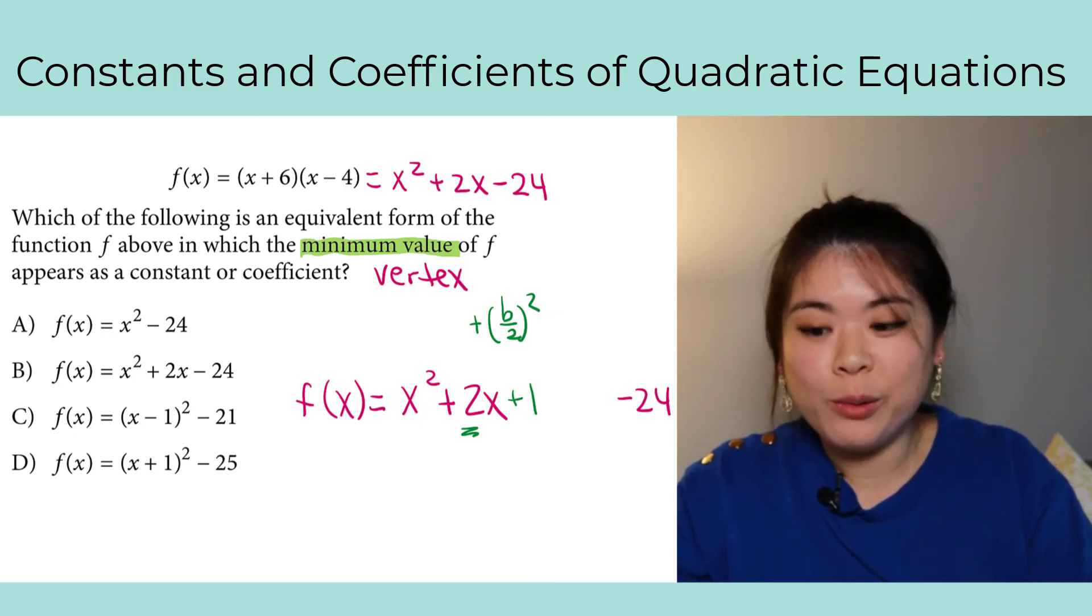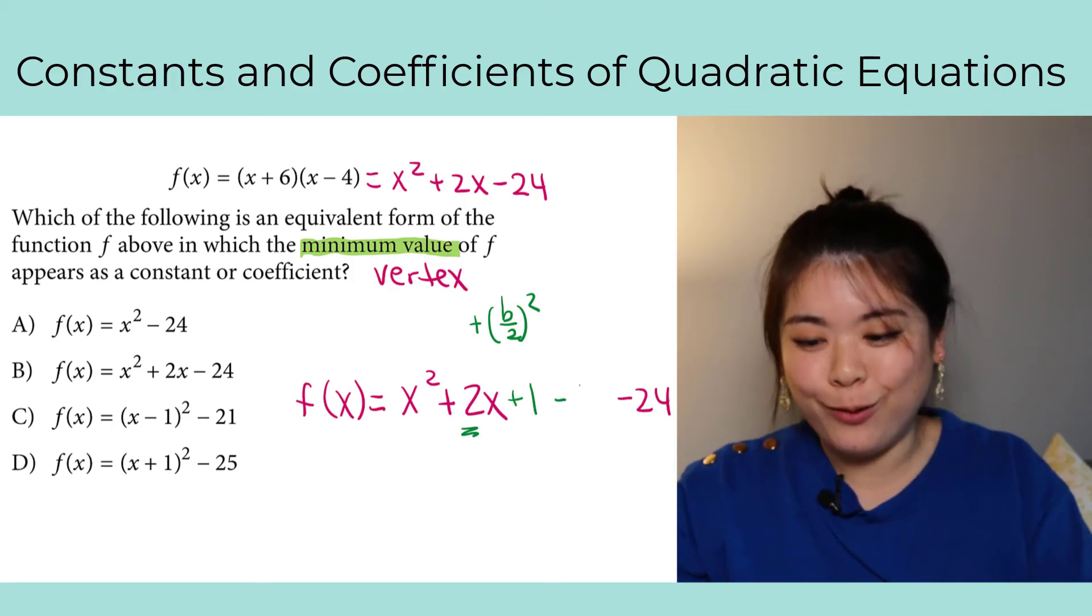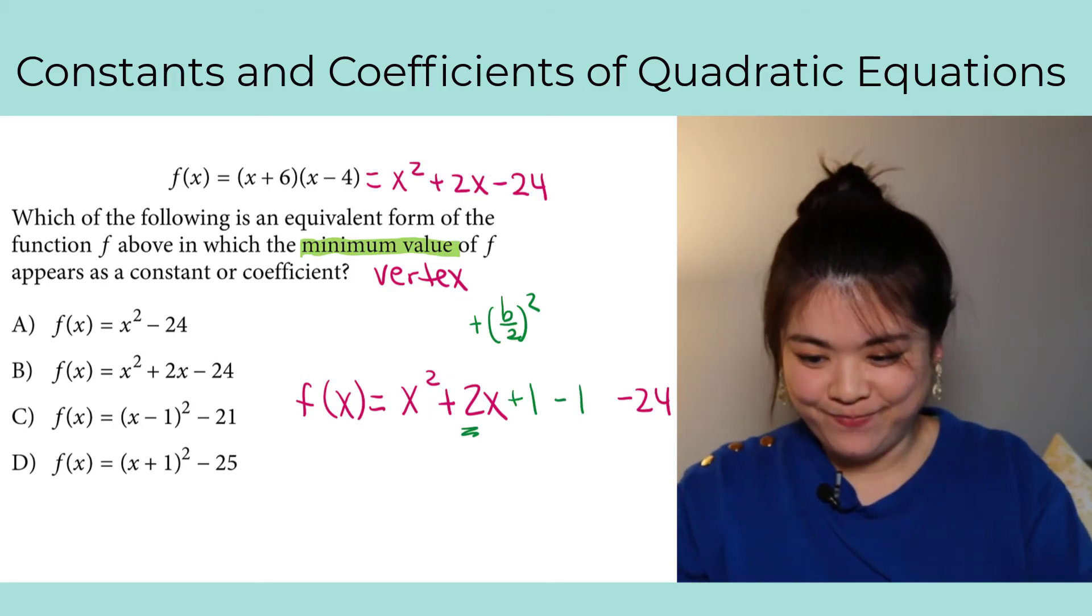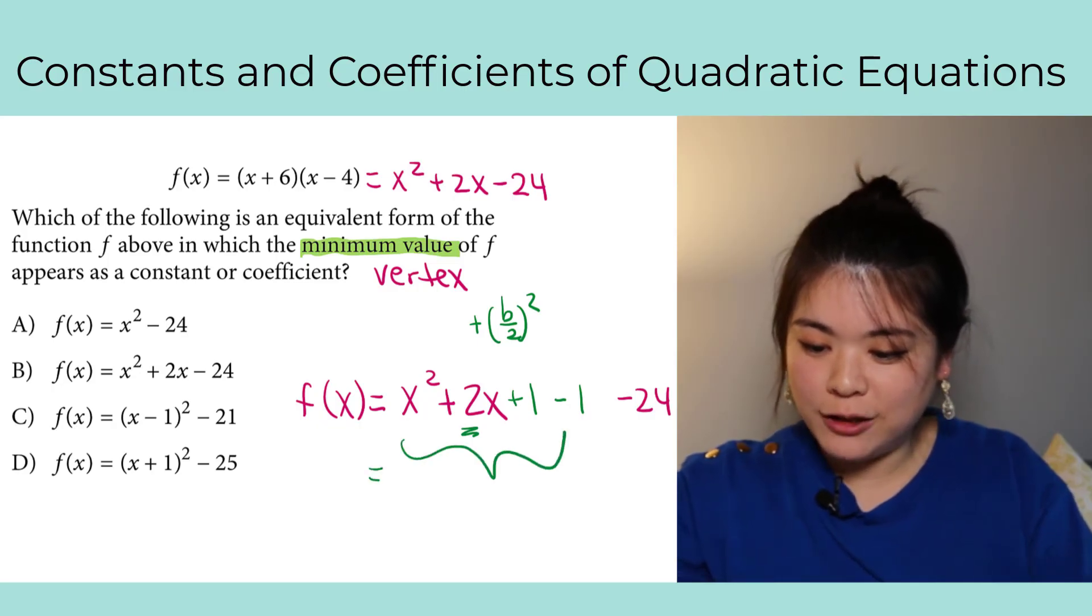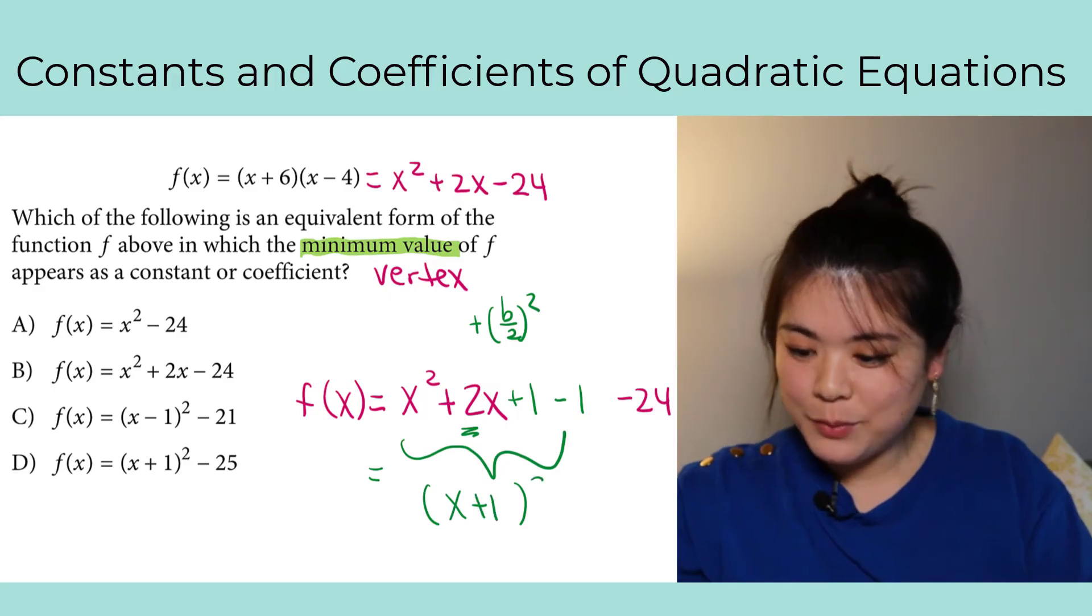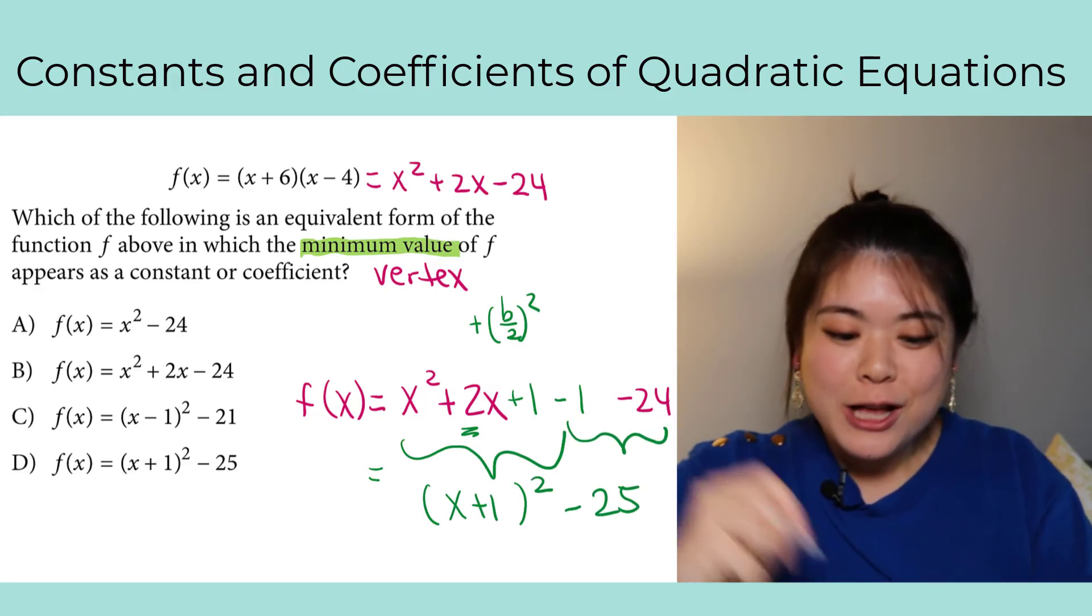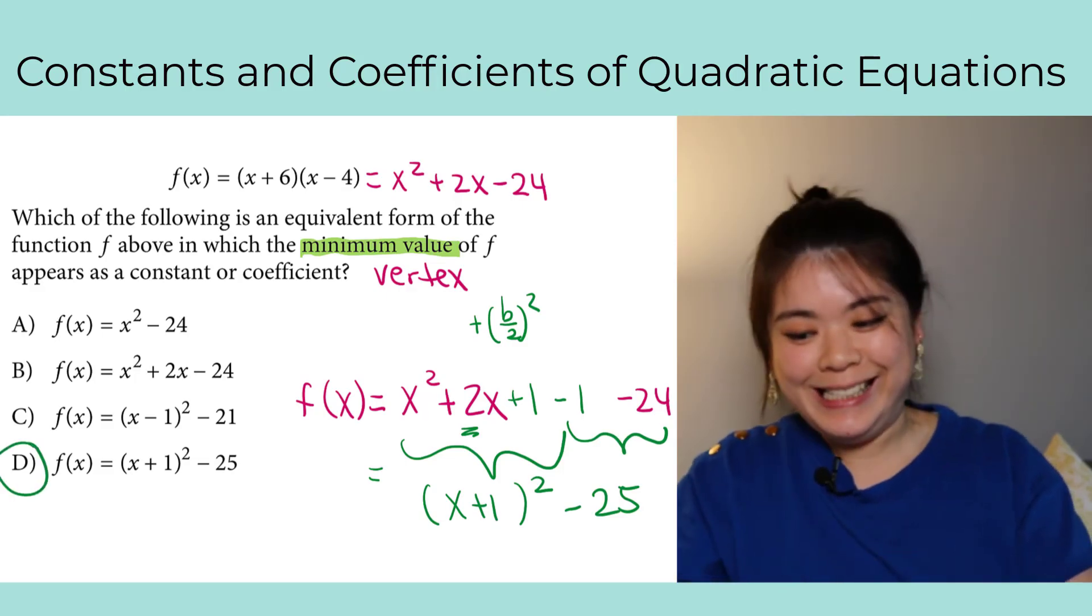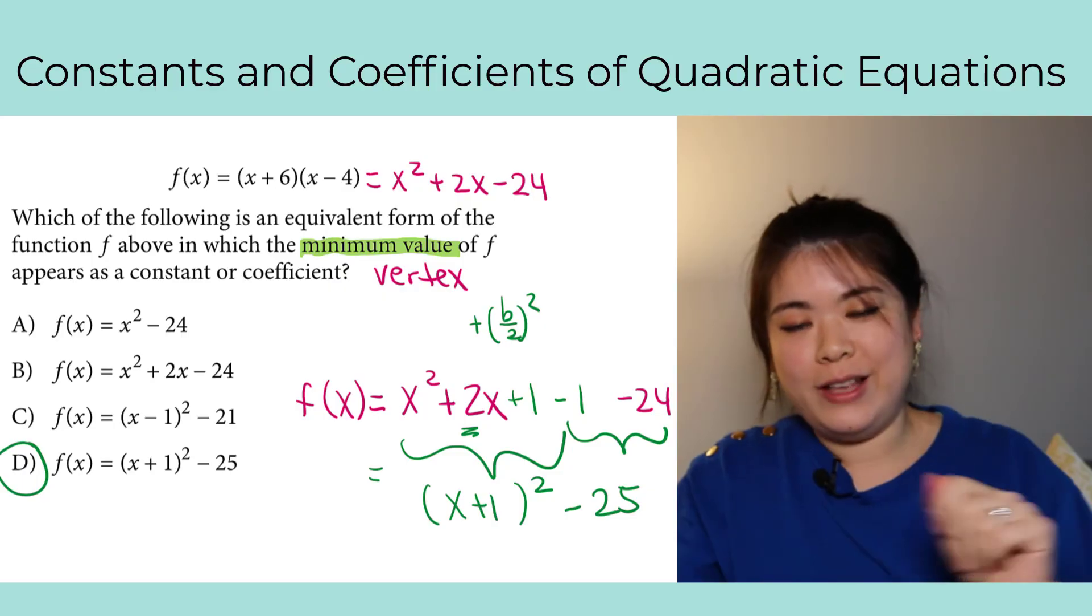So now I'm going to just factor the first part, which becomes x plus 1 squared, and then combine my constants, so I get minus 25. So my actual answer here is D, because that is the exact vertex form I would get for this equation.